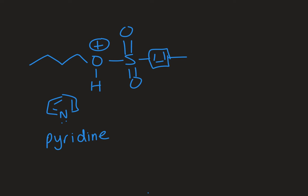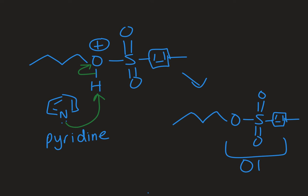So now I have the TS part attached to my oxygen, I just have to deprotonate it. The structure that is the cyclic system with the nitrogen in it is called pyridine and that's just a base, it's a good base. So it's going to come in here and deprotonate and that would give me my neutral product with my OTS on it. So now I have a good leaving group.